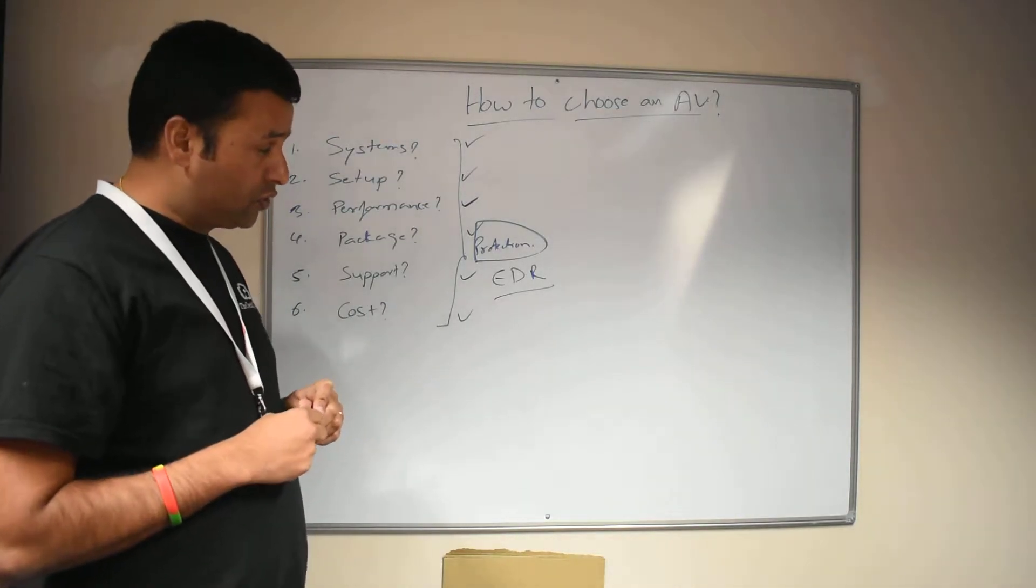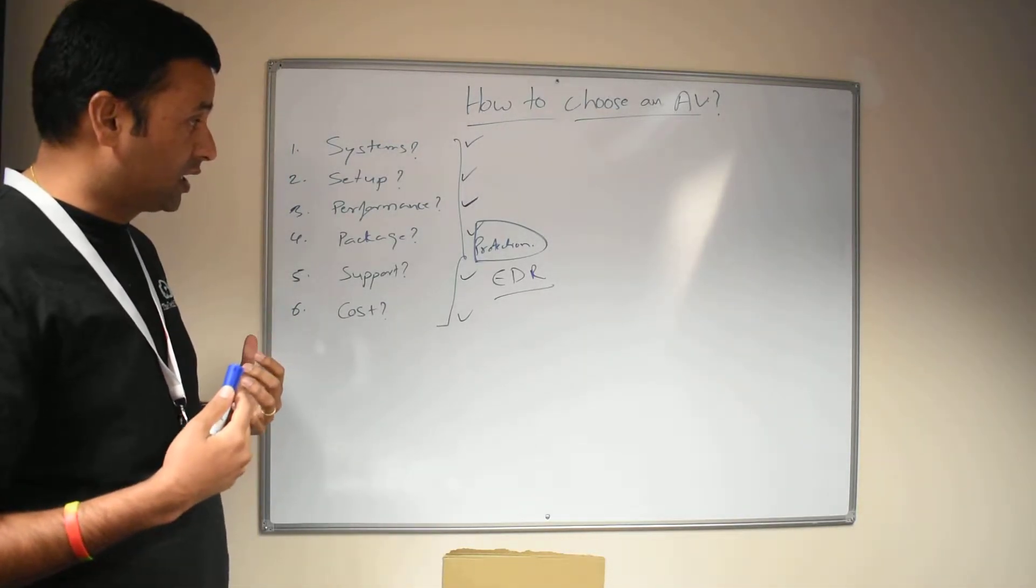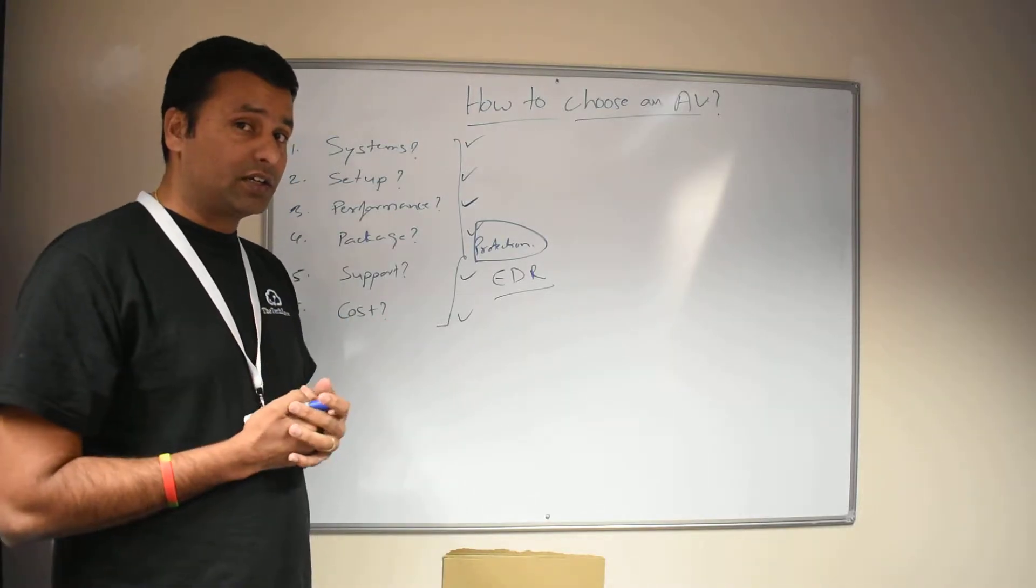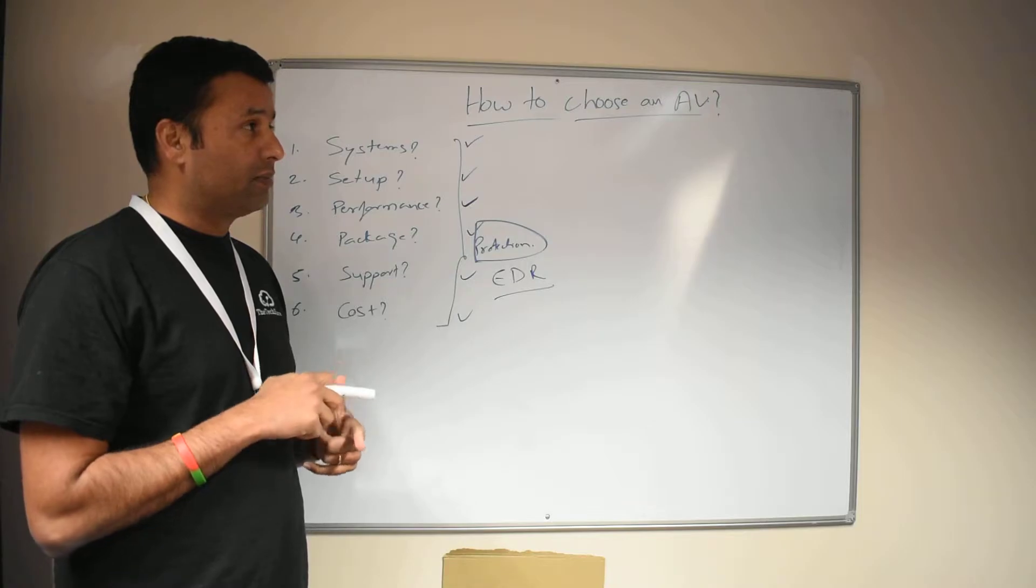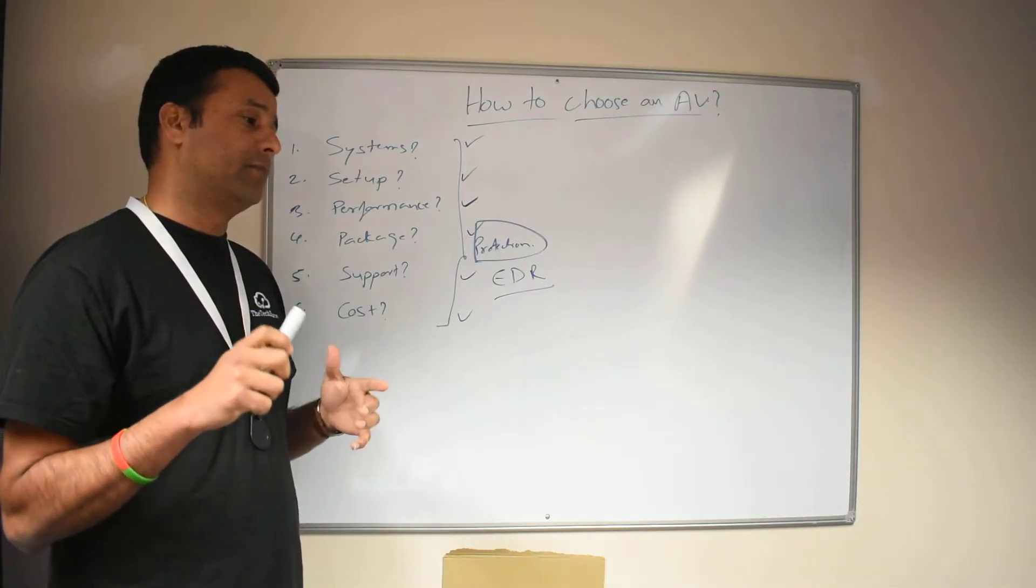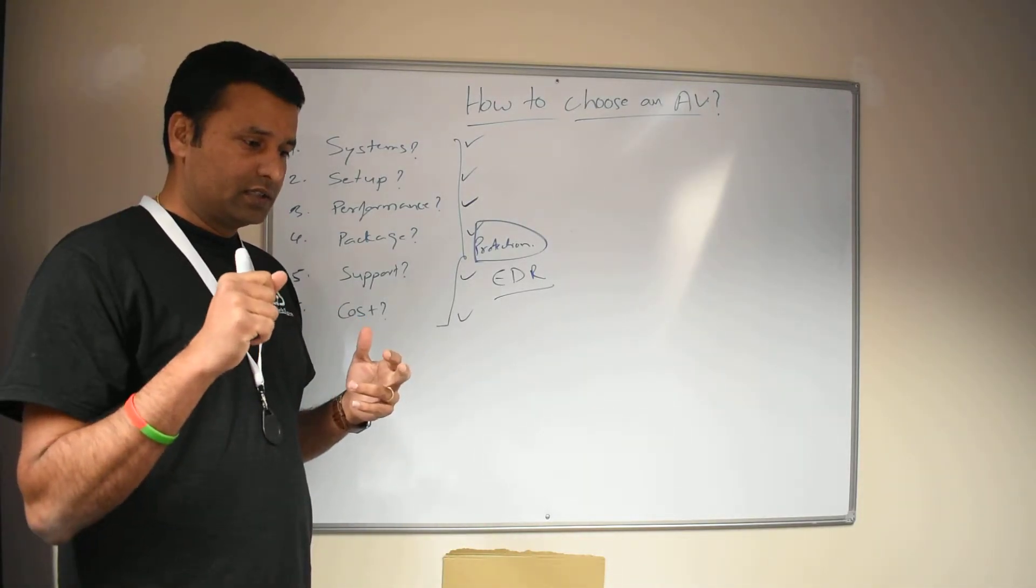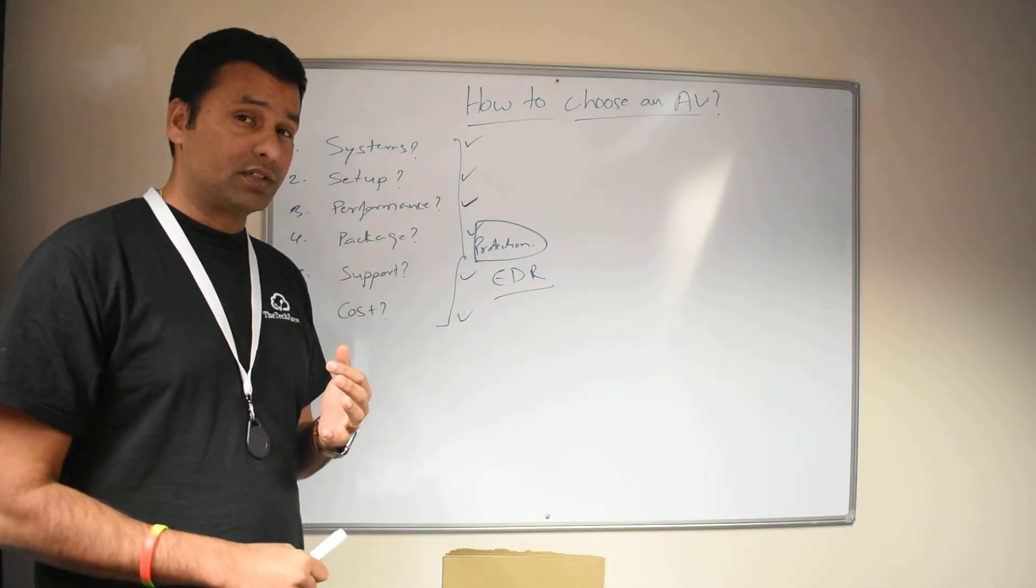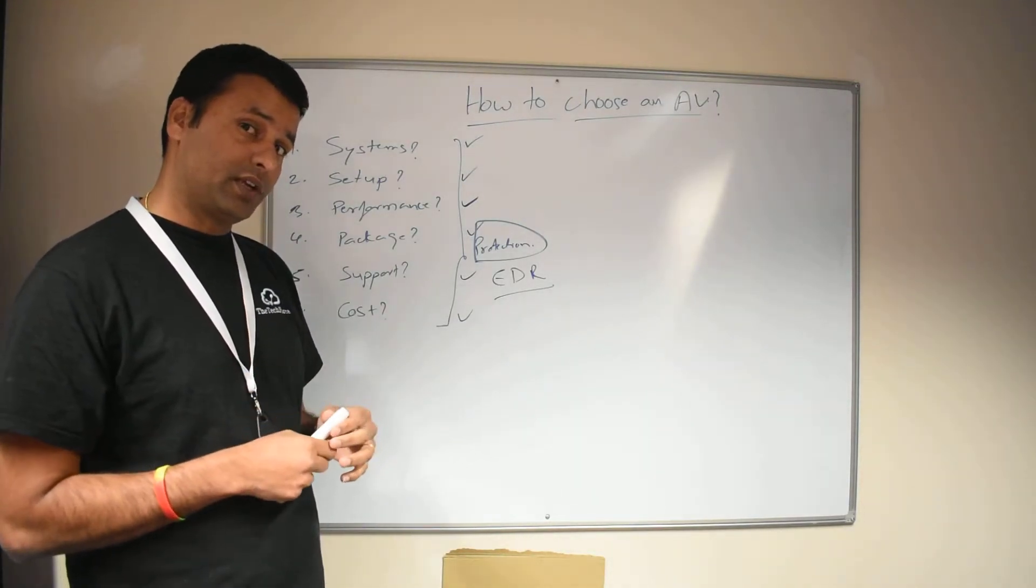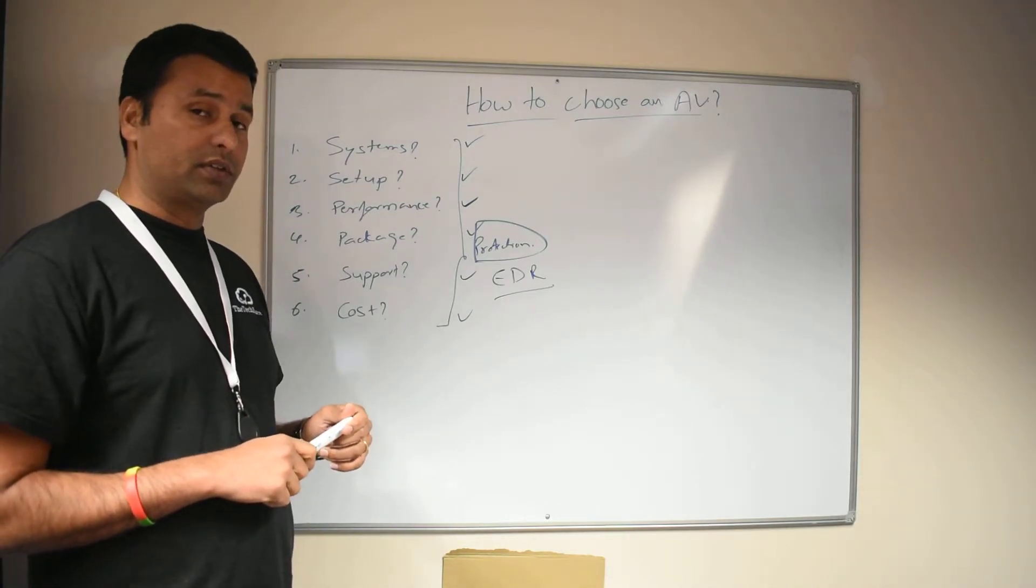So there are a few we would recommend looking at. If you go to Gartner Peer Insights, you can look at them as well. So those few are Carbon Black, Sentinel One, CrowdStrike, Panda Security. So these four, which we usually recommend, you can look at, take a look at them and decide which one works for your business.